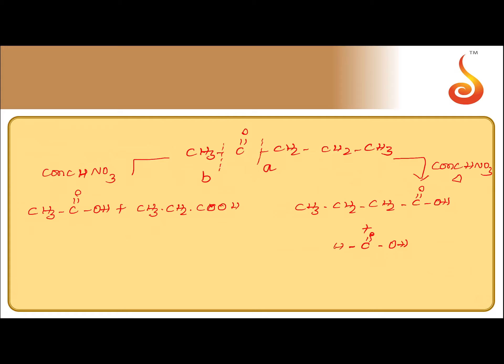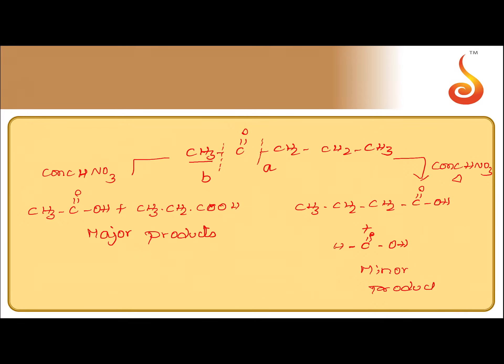According to Popov's rule, the keto group stays preferentially with the smaller alkyl group. Here the smaller alkyl group is the methyl group, so the keto group preferentially stays with it, giving ethanoic acid and propanoic acid as major products, while butanoic acid and formic acid are the minor products.